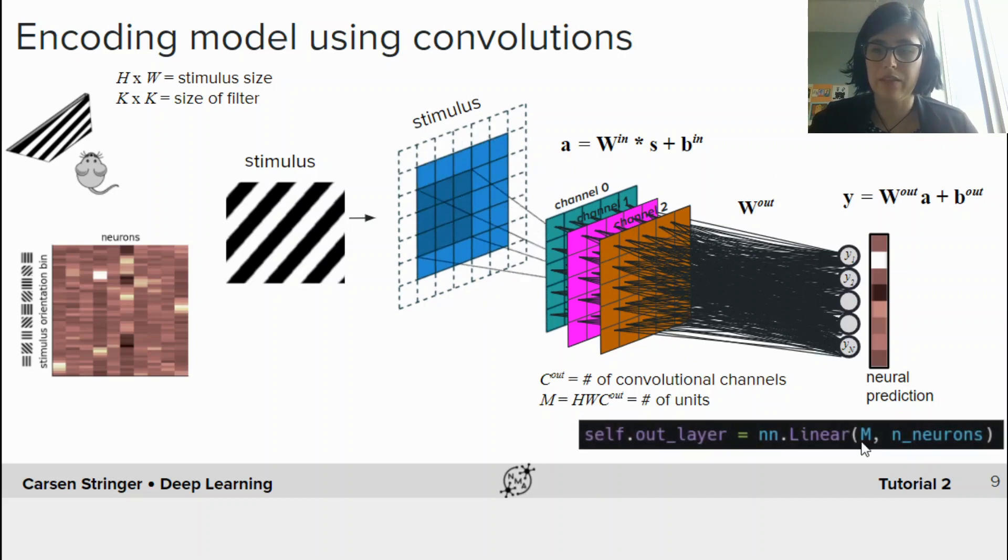We implement this linear layer the same way with nn.linear, and the input size is M, the number of hidden units here, and the output size is the number of neurons. Basically every single unit in this convolutional layer can influence and try to predict what's going on in each neuron here.